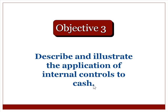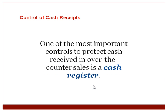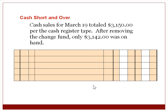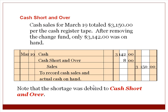The third objective is to describe and illustrate the application of internal controls to cash. One of the most important controls to protect cash received in over-the-counter sales is a cash register. A predetermined amount of money given to each cash register clerk is called a change fund. For example, cash sales for March totaled $3,150 per the cash register tape, but after removing the change fund, only $3,142 was on hand, resulting in a cash-over-and-short entry.